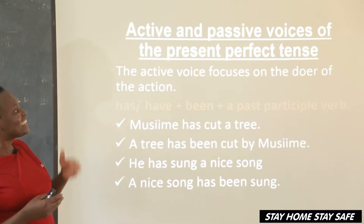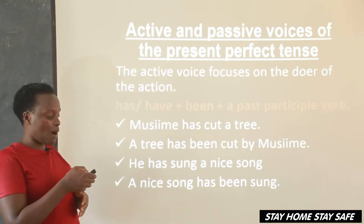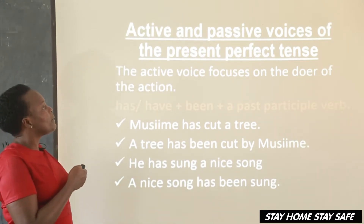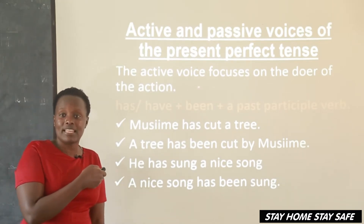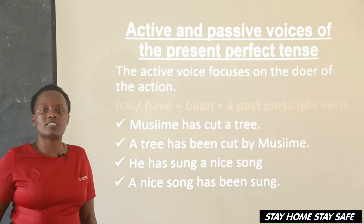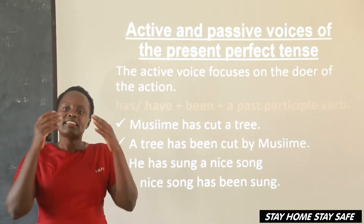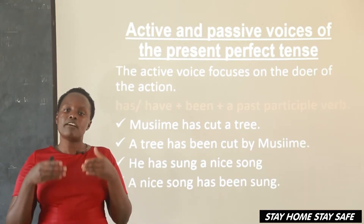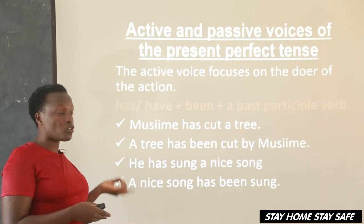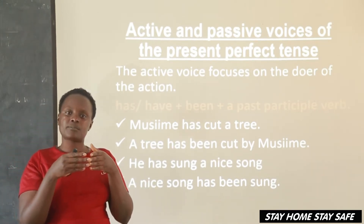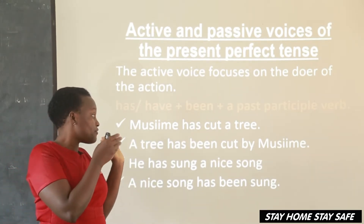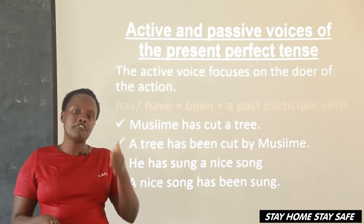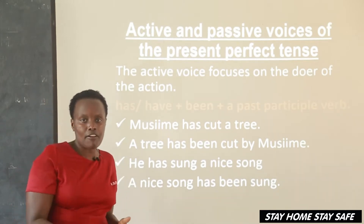So, the active voice and the passive voice. Right now I'm focusing on the active voice. As we said last time, the active voice focuses on the doer of the action — the subject, the person who performs an action. Here we are focusing on the subject. As I told you last time, we cannot change a sentence from active to passive unless the sentence has three parts.